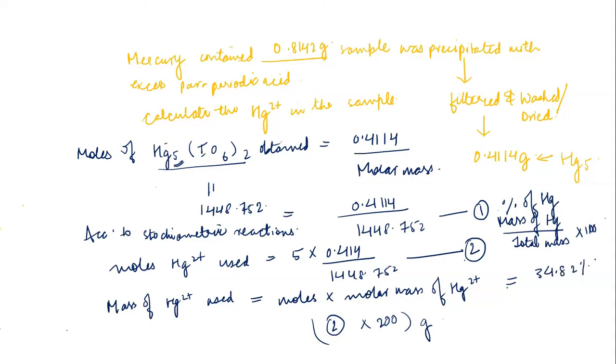The final answer is that the percentage of mercury is 34.82 percent.